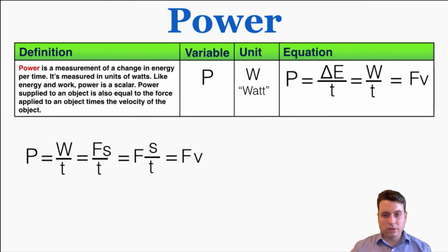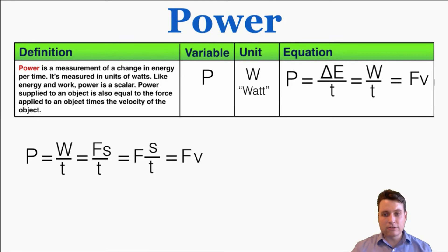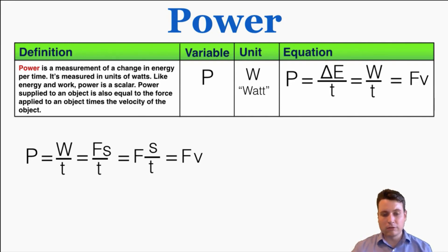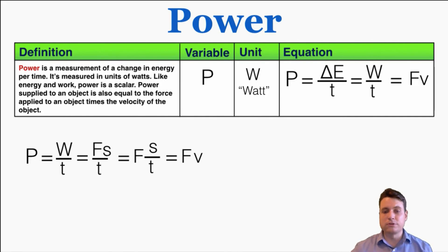This equation is meant to show the connection between the two formulas. Even though they're written differently, they're actually implications of each other. If power is change in energy divided by time, that's also equal to work divided by time, because work is change in energy. And because work is force times displacement, power equals force times displacement over time. Since displacement over time equals velocity, we can replace displacement over time with velocity, giving us force times velocity as another equation for power. And that's everything you need to know about the definition of power.